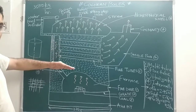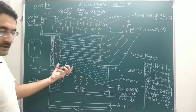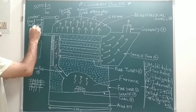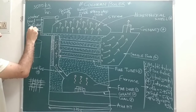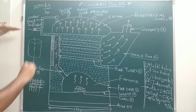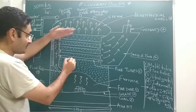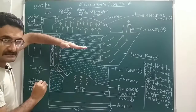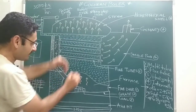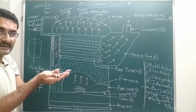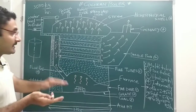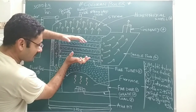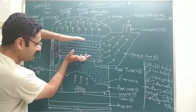The circulation of water in this boiler is natural. We are not using any type of pump, so forced circulation is not present — only natural circulation. Cold water is passed through the feed check valve. Cold water has higher density, so it moves in the downward direction and comes in contact with the fire tubes, where it is heated and converted into hot water.